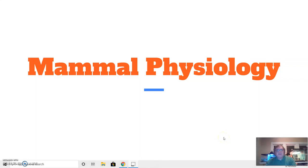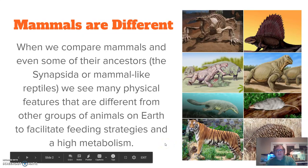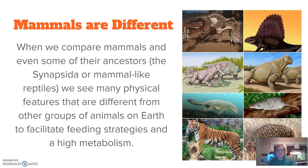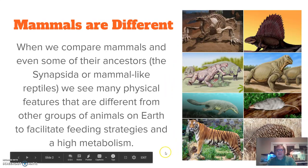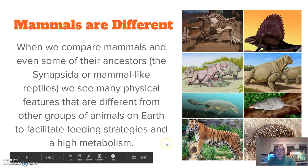We're going to talk about mammal physiology — aspects of mammal bodies that help differentiate them from other animals. Mammals are different. When we compare mammals and even some of their ancestors, like the synapsida or mammal-like reptiles, we see many physical features that are different from other groups of animals on Earth. These help to facilitate feeding strategies and a high metabolism.